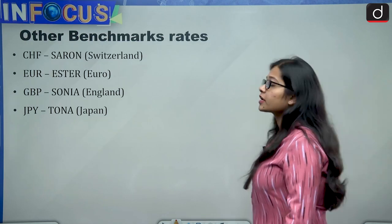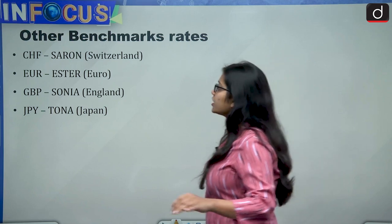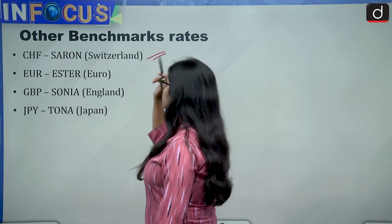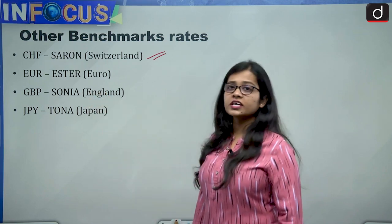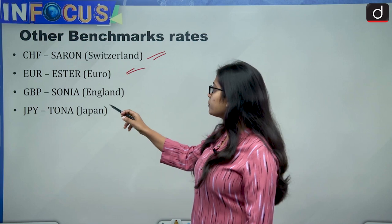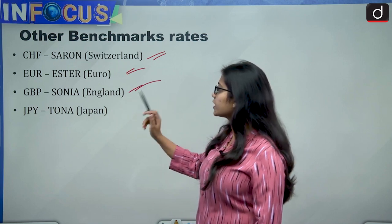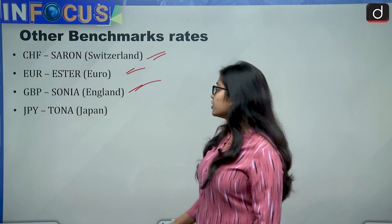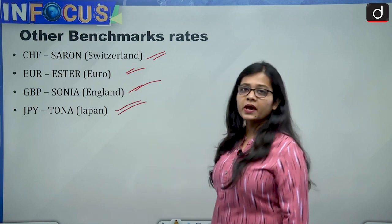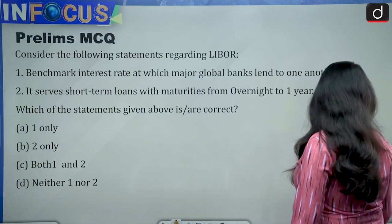Other benchmark rates used around the world other than LIBOR include: CHF SERON used in Switzerland, EUR ESTER for the euro, GBP SONIA used in England/Great Britain, and JPY TONA used in Japan. These are a few of the alternative benchmark rates operating globally.